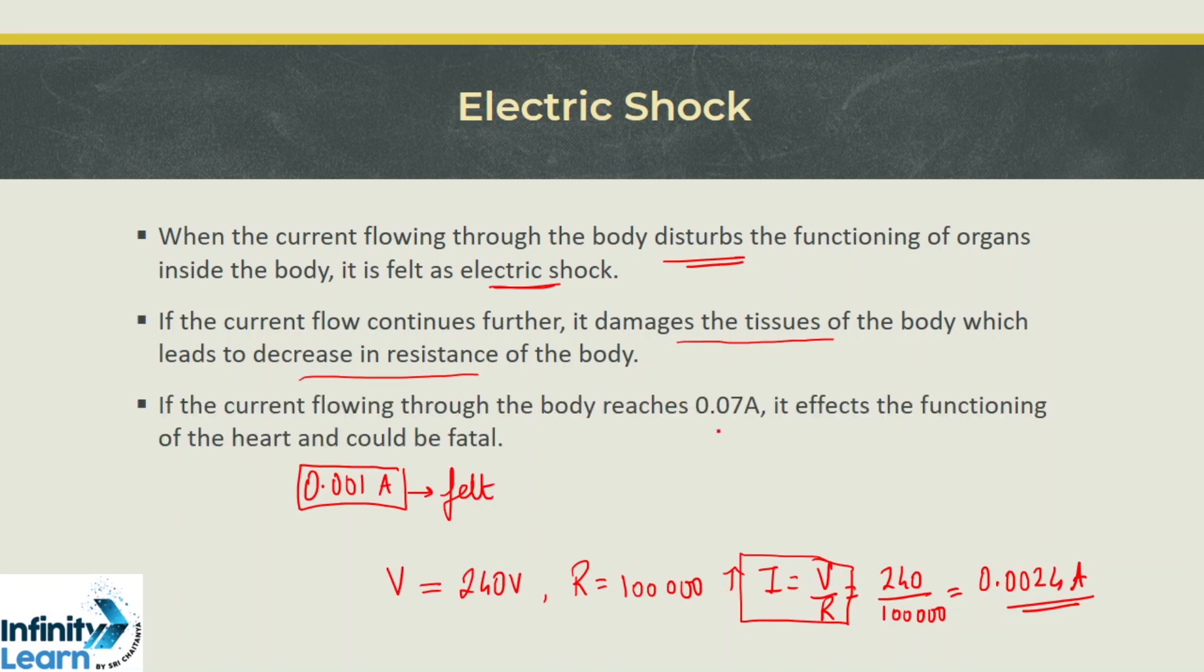So if the current flowing through the body after increasing, it reaches to a value of around 0.07 ampere, it affects the functioning of the heart as well. And it could prove fatal if it is allowed to pass for more than a second. We should be very careful around the electrical lines.